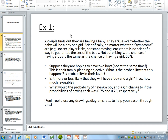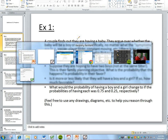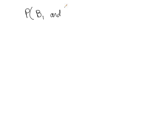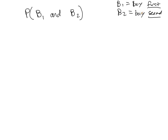You can go about this a couple of different ways. You can think about this as the probability of having a boy the first time and a boy the second time. So B1 is the event that it's a boy first, and B2 is the event that it's a boy second. Because we're assuming these two things are independent — that is, having a boy the first time does not affect the probability of having a boy the second time — we know that's just 50% times 50%, which equals 25%.